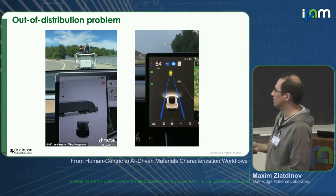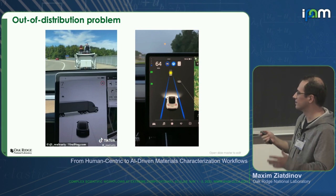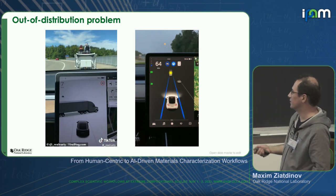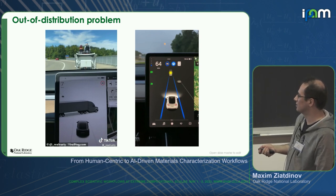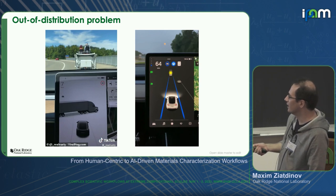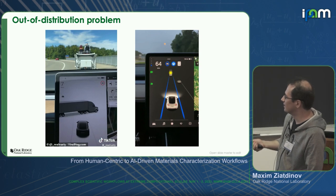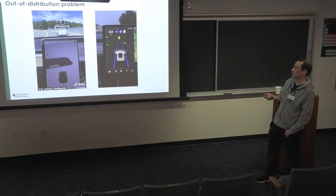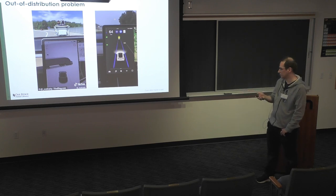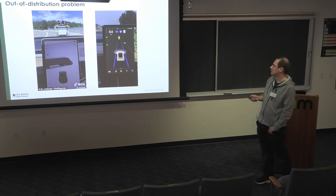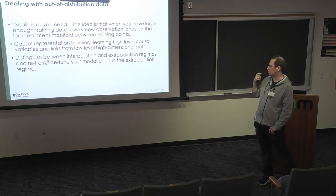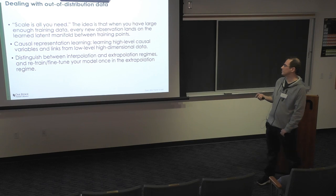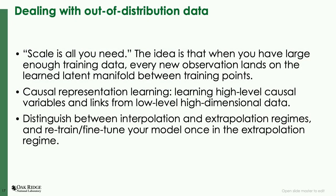One of the challenges is the so-called out-of-distribution problem: when new data comes from a distribution different from that of the training data, your pre-trained model can fail quite spectacularly. For example, a Tesla car in self-driving mode confused a horse carriage for a truck blocking the road, because they didn't have enough training examples of horse carriages. Another example: it confused the moon for a yellow traffic light. If you've run deep learning for some time on real-world experimental data, you've probably seen something like this. There are several ways of dealing with it. The first is 'scale is all you need' — have enough training data, learn the latent manifold, and every new observation lands on that learned manifold between training points.